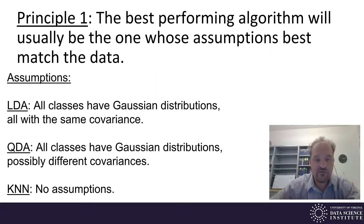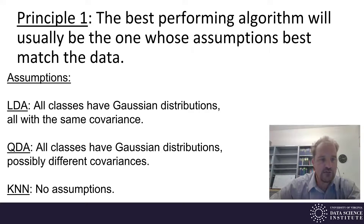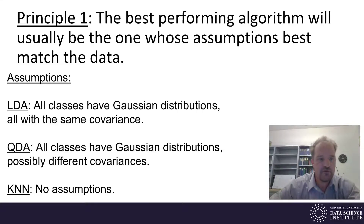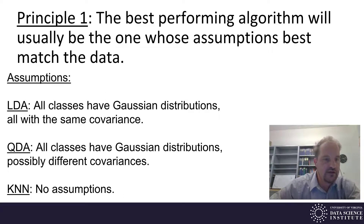In k-nearest neighbors we really don't have any assumptions. If you think about the decision boundaries that separate classes: in LDA those decision boundaries are going to be lines, planes, or hyperplanes. In QDA they have a parabolic geometry, meaning there will be parabolas in two dimensions or higher dimensional versions of parabolas. In k-nearest neighbors we have very flexible decision boundaries — there's not really any restriction on what they can be given enough data.